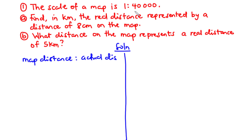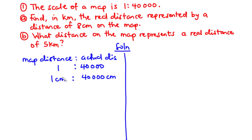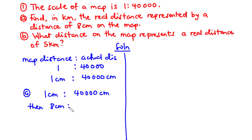From the question, we have been told that the scale of the map is 1 is to 40,000, which primarily means that 1 centimeter on the map represents 40,000 centimeters on the ground. For Part A, we want the real distance represented by 8 centimeters on the map. So if 1 centimeter represents 40,000 centimeters on the ground, then 8 centimeters on the map represents X centimeters on the ground.